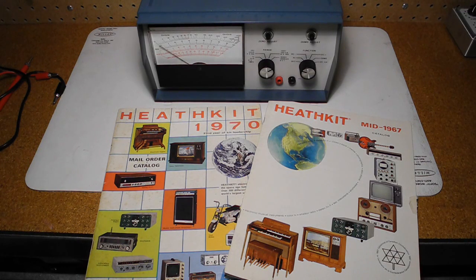Heathkit was a manufacturer of electronics in kit form. Their product line included amateur radio, test equipment, and various consumer products. By building a piece of electronics, you could save money and gain the satisfaction of having assembled it yourself.